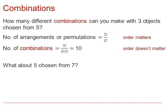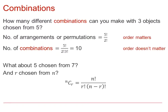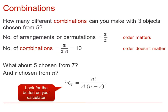What about five chosen from seven? How would we work that out? And R chosen from N? To generalise, we use NCR, which is also a button on your calculator, which will give us N factorial over R factorial times (N minus R) factorial, to work out any number R chosen from N as a combination. Note, this also relates to binomial coefficients and Pascal's triangle in the core pure maths AS syllabus.